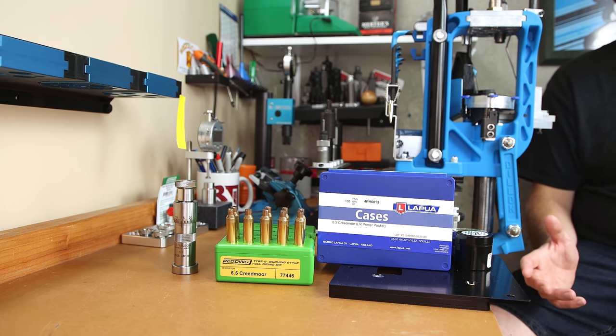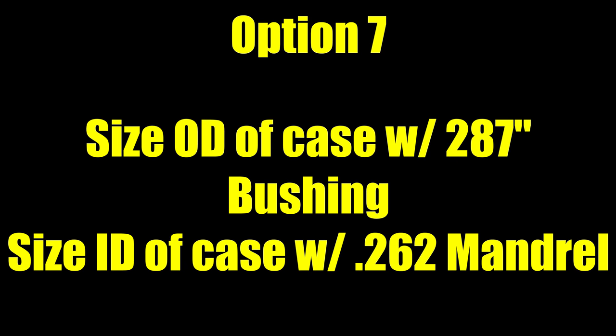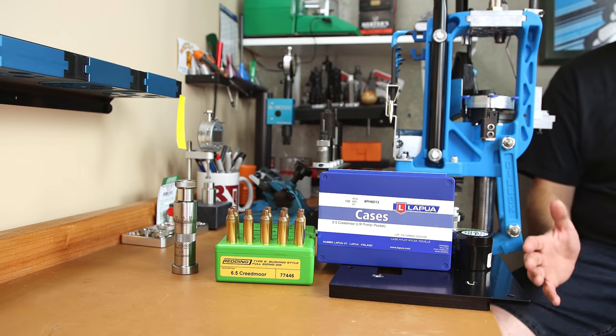Option 7: we'll be using that same 287 Short Action Customs bushing through our neck die, but we're going to add an additional step and run an expander mandrel through it at 262 thousandths to see what happens.